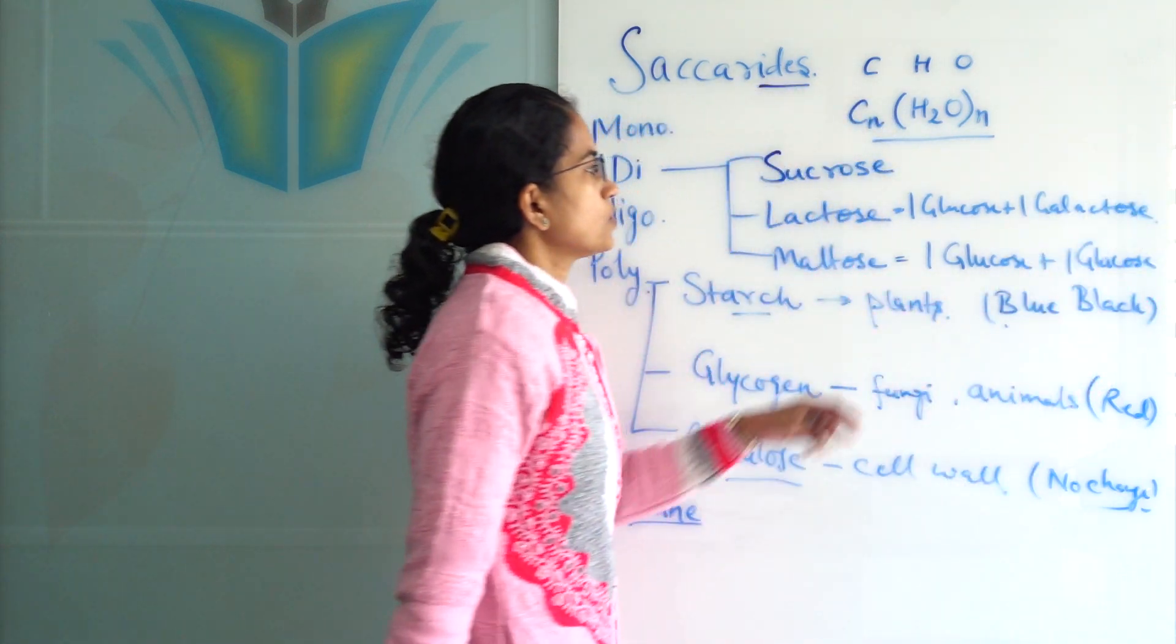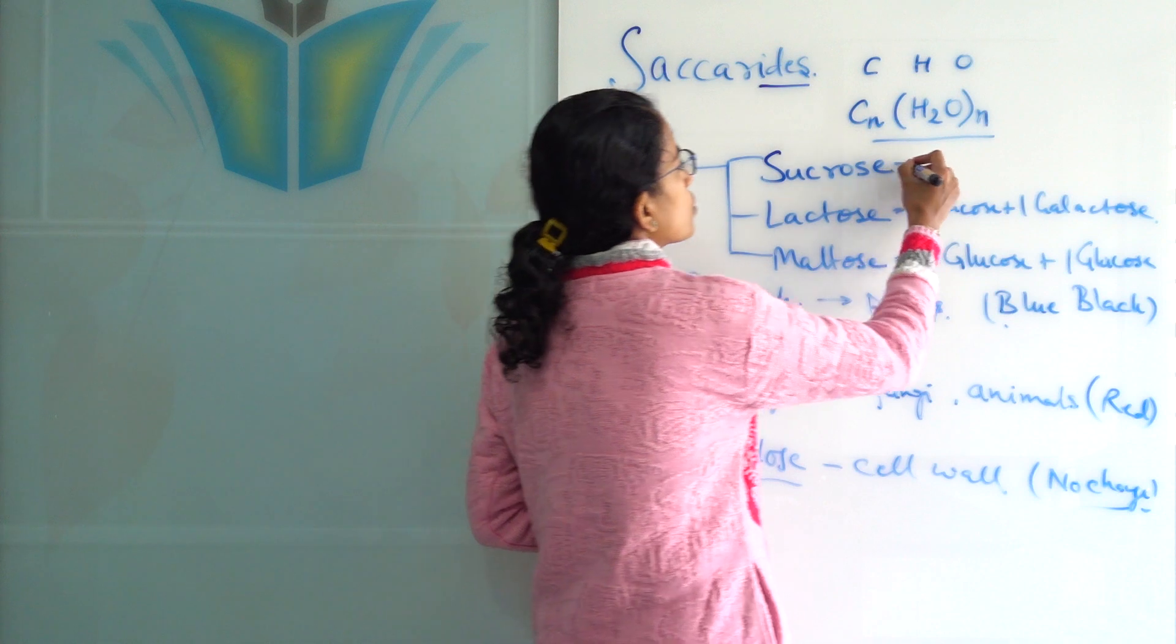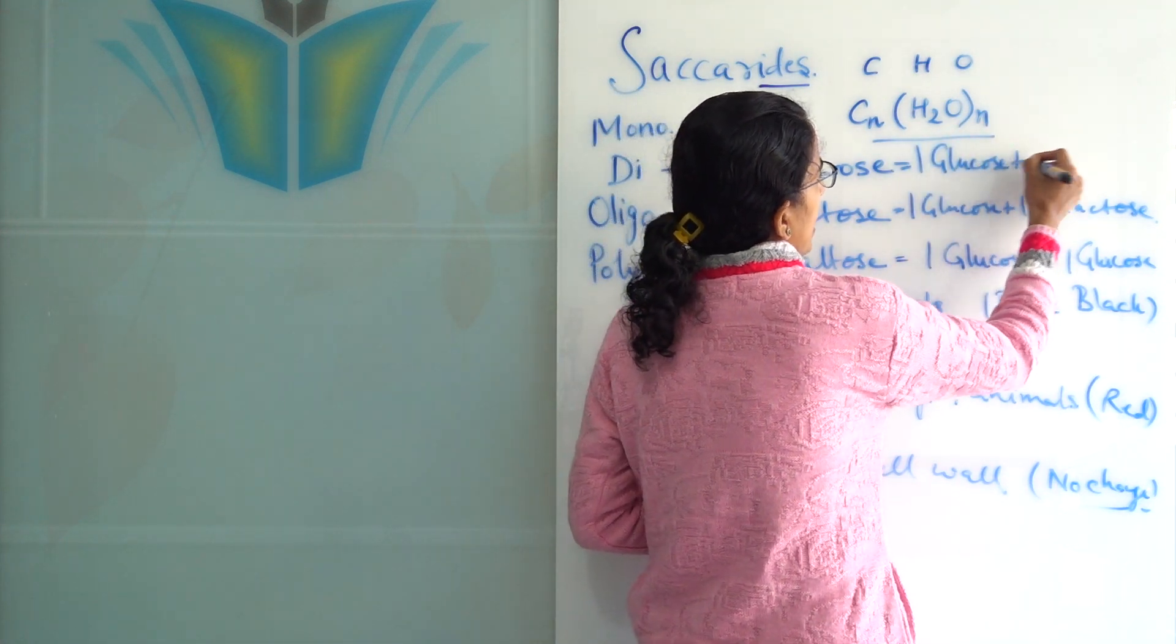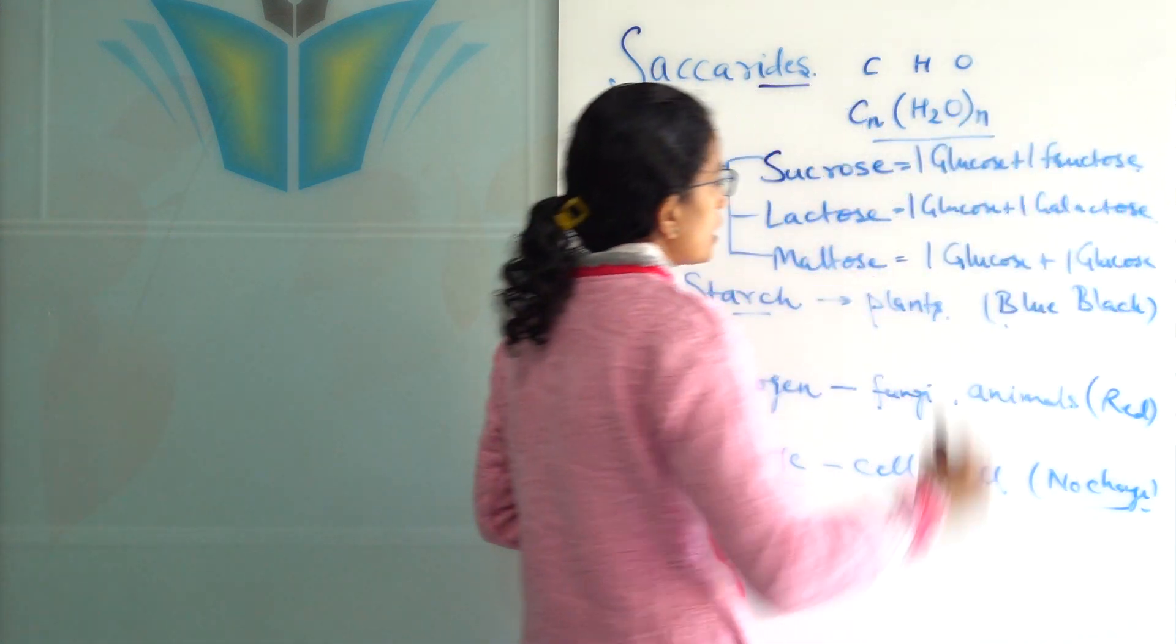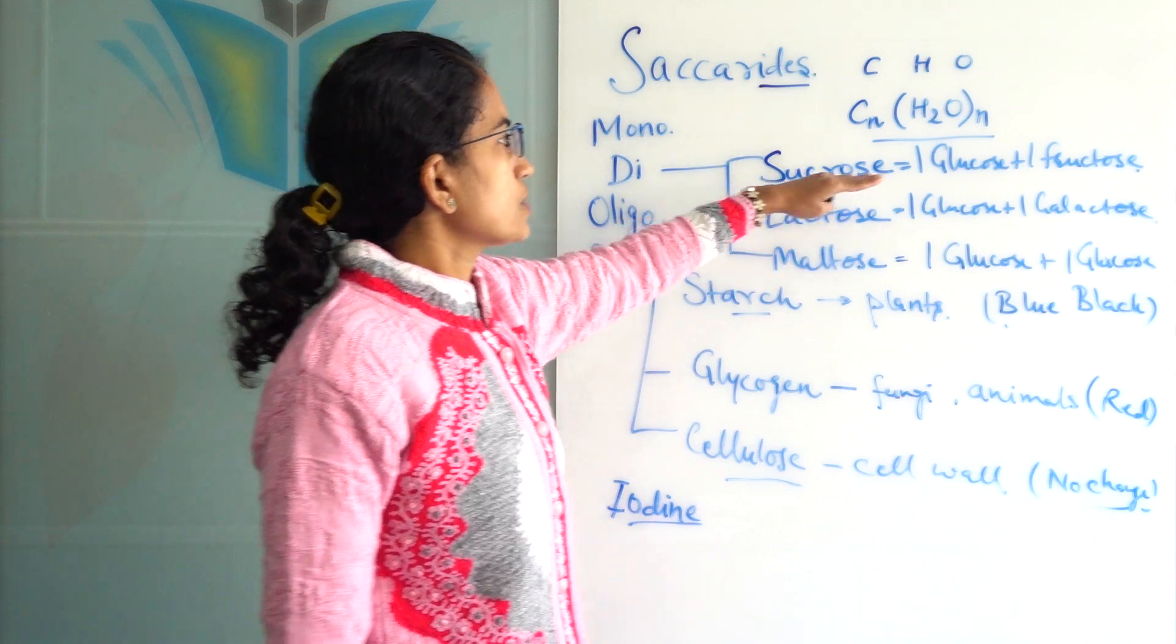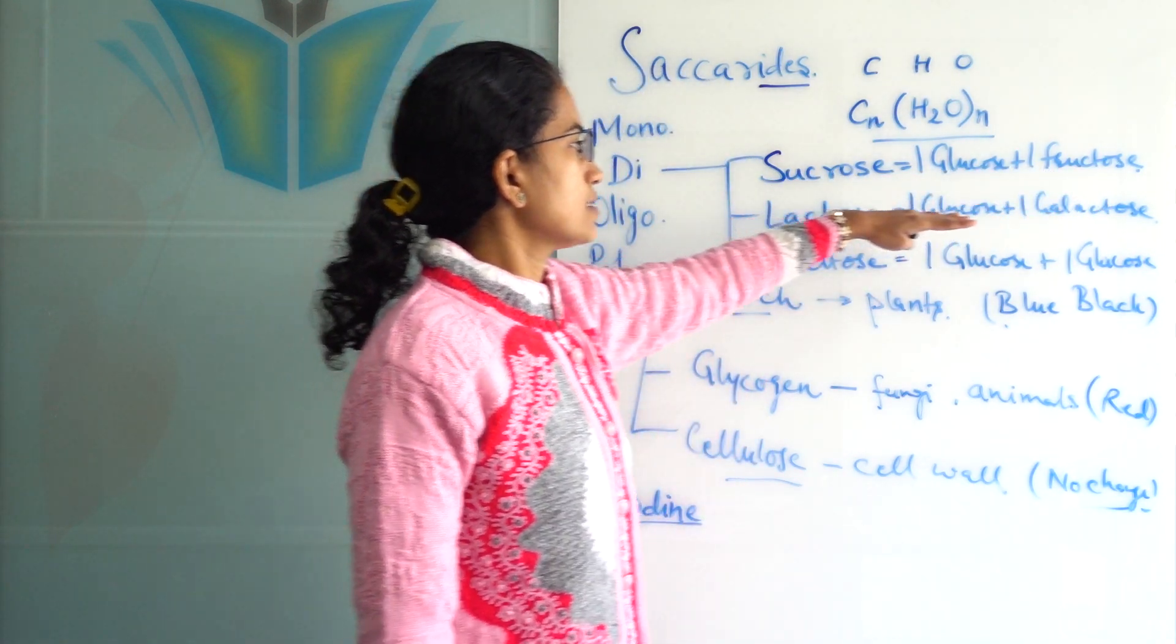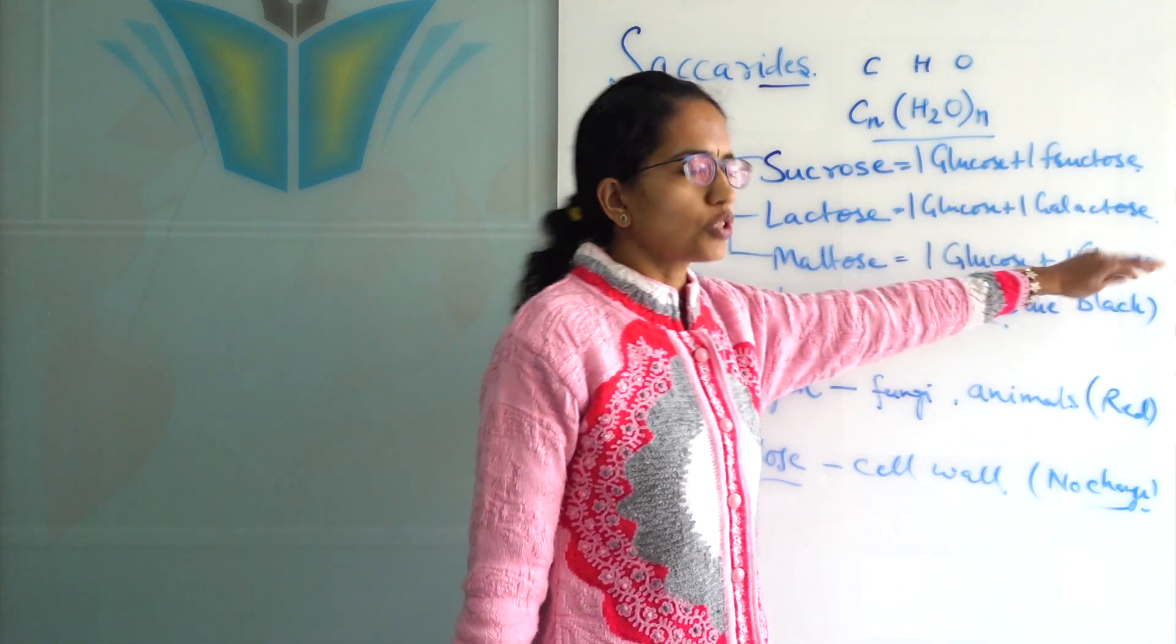So, one unit of galactose and one unit of glucose would give you lactose. And what is sucrose composed of? Sucrose is composed of one unit of glucose plus one unit of fructose which is the fruit sugar. So, sucrose comprises of glucose and fructose. Lactose comprises of glucose and galactose and maltose comprises of two units of glucose.